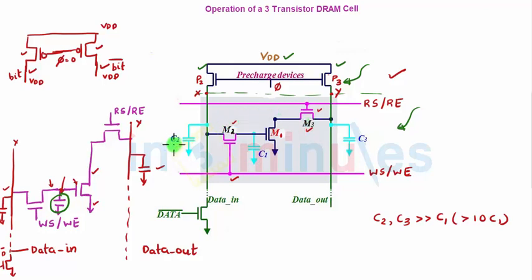If you see in the diagram C2 and C3 are the capacitors connected to this line. Technically in real time there will be a lot of such three transistor DRAM cells connected to these lines. All this will have a lot of capacitance connected in parallel and when capacitors are connected in parallel they get added up. So C2 will have a very large value, so would be C3.